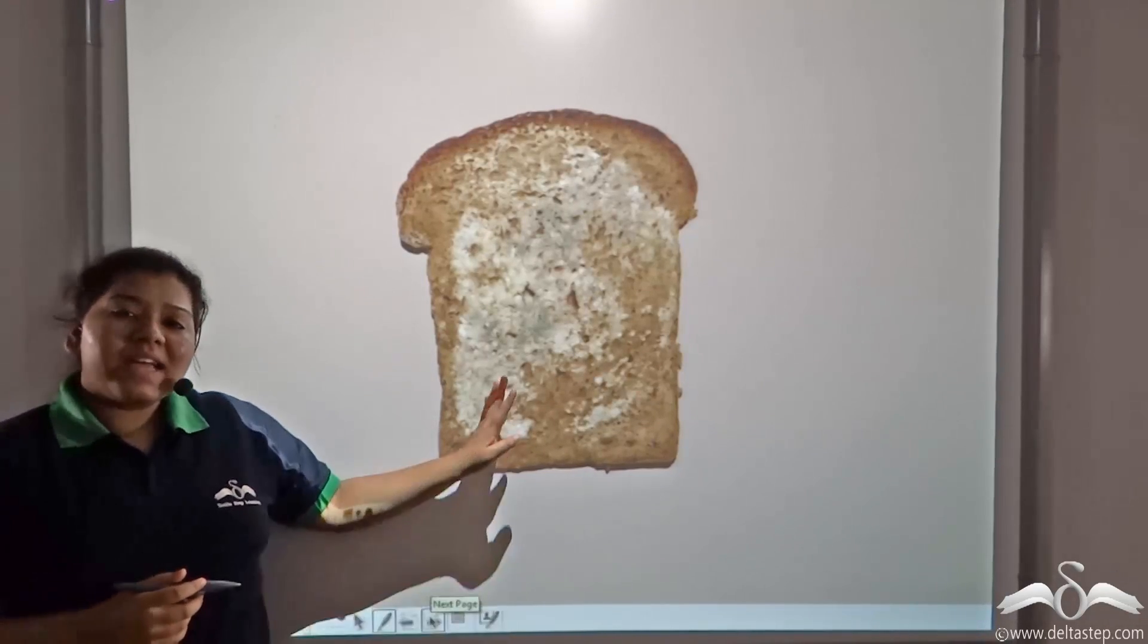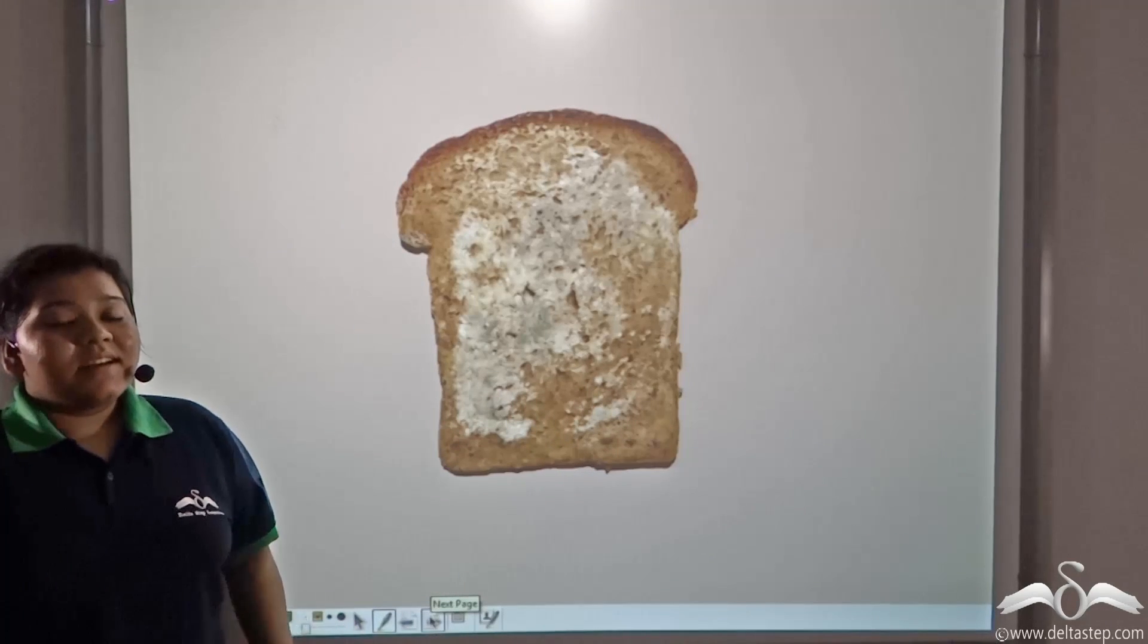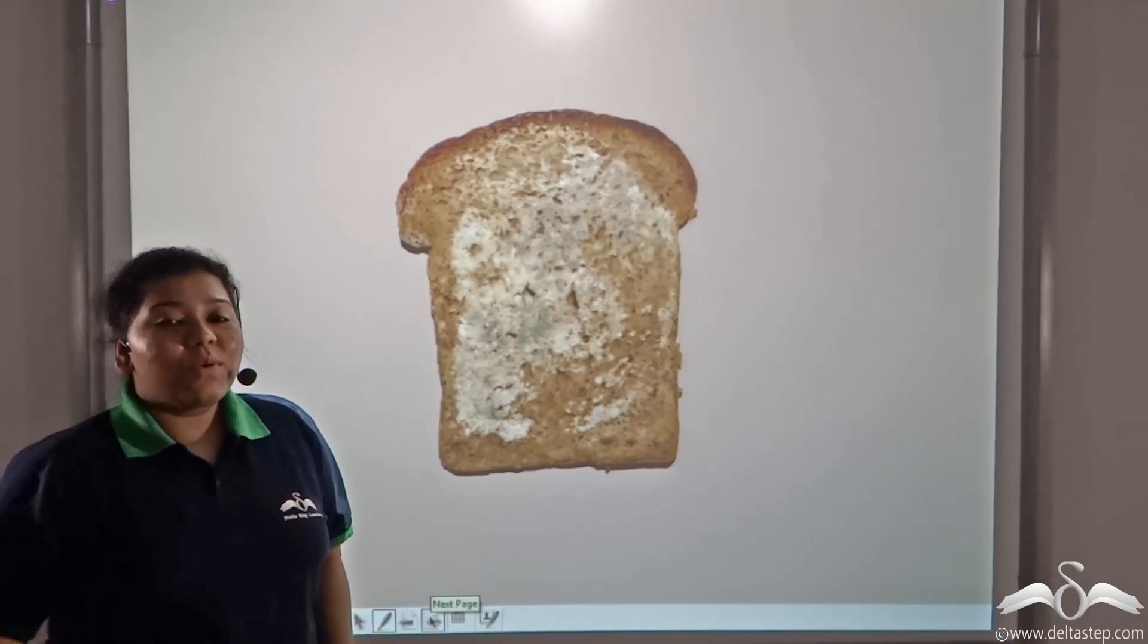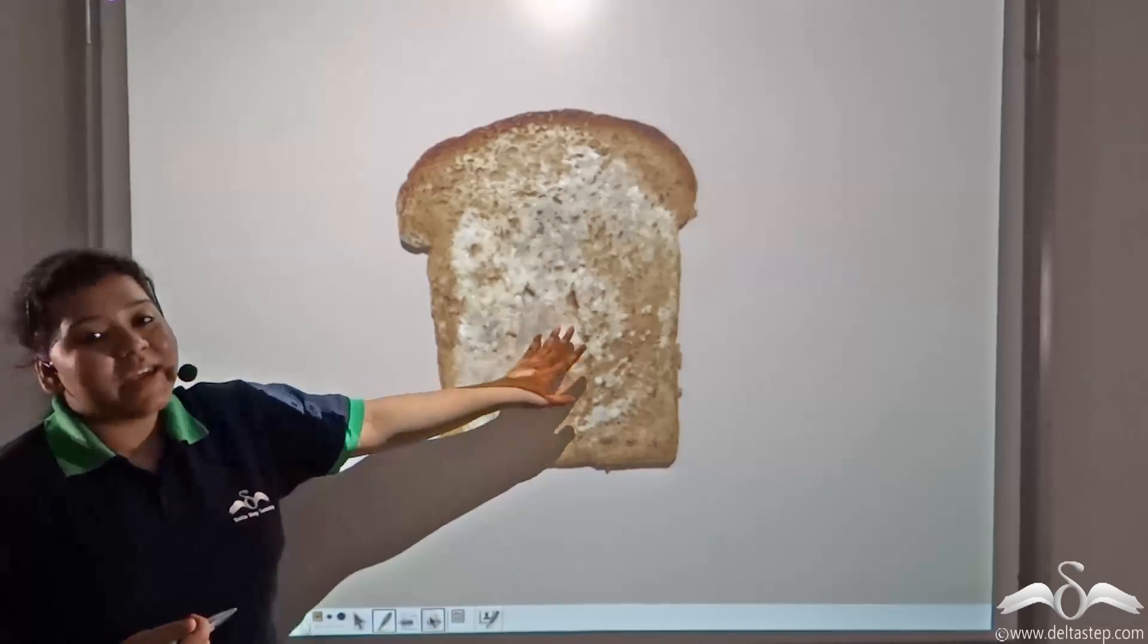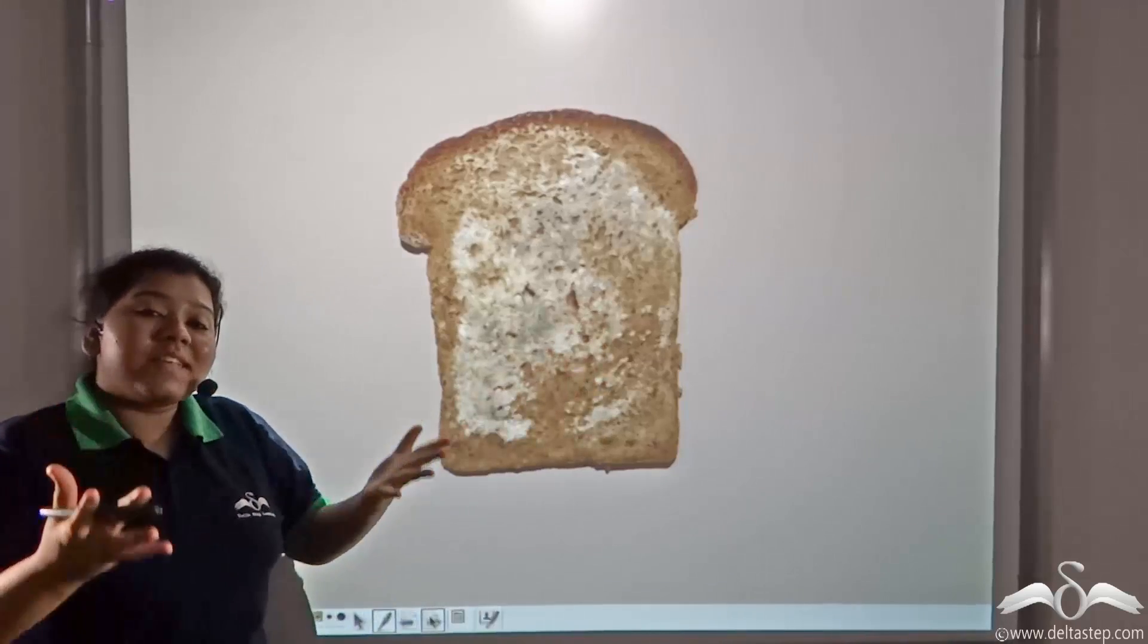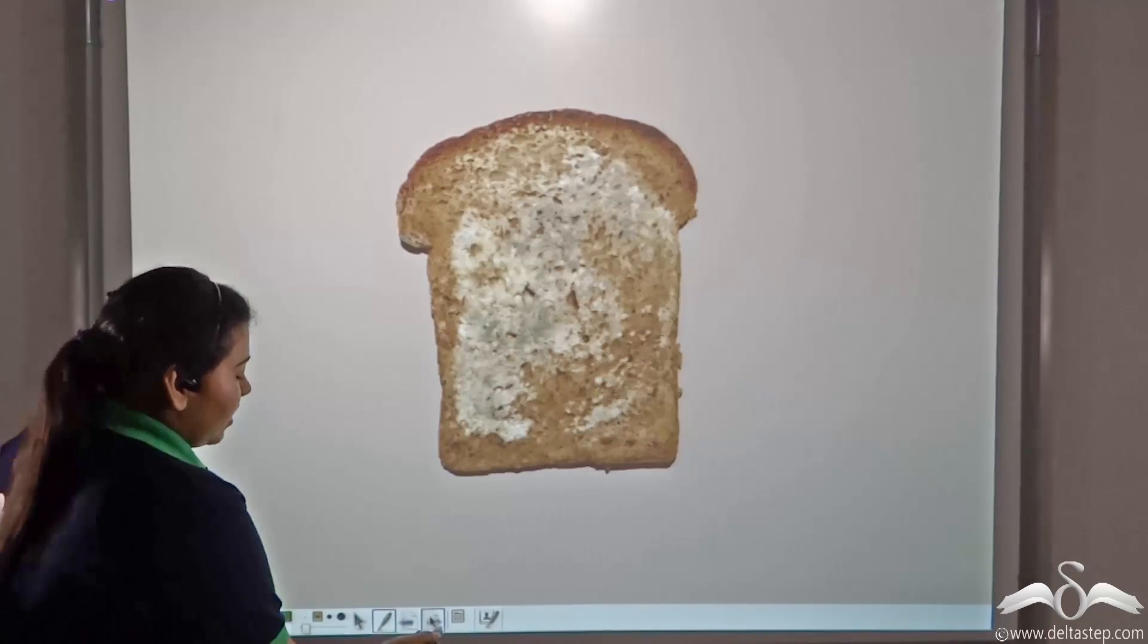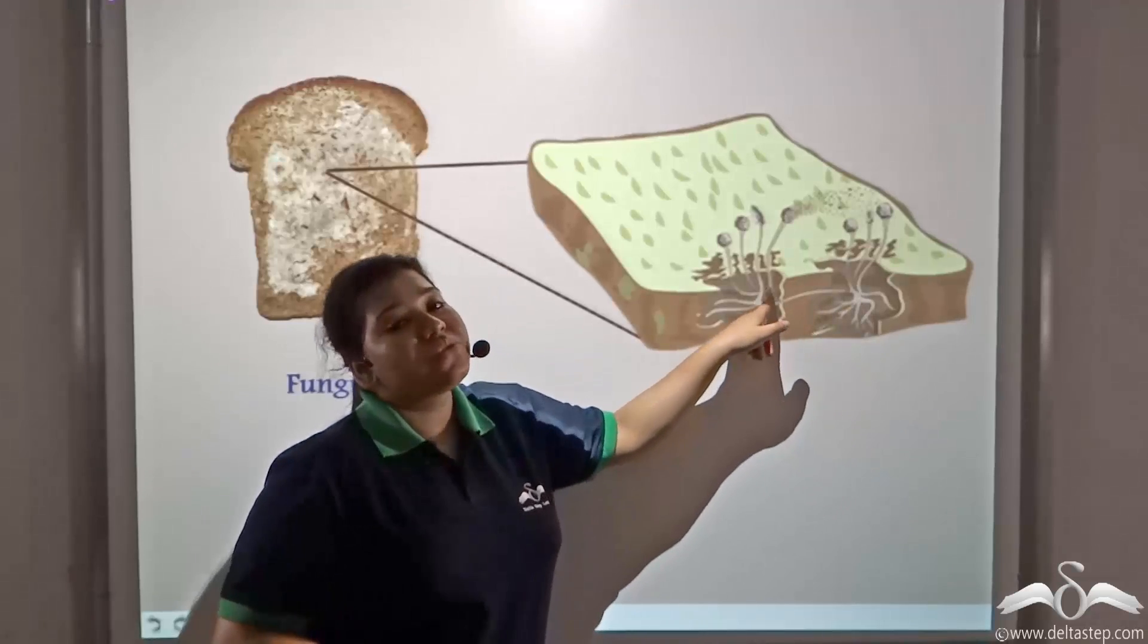Now, you might have seen this bread getting stale. Now, bread gets stale only when these organisms grow on bread. These organisms are visible to our naked eyes, but their structure is not visible through our naked eyes.